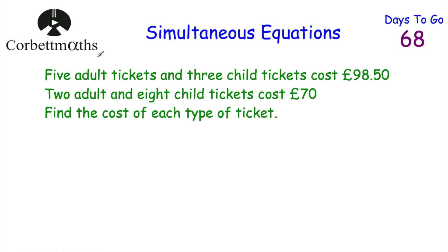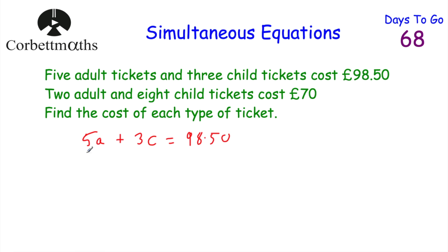Now let's have a look at a wordy question. 5 adult tickets and 3 child tickets cost £98.50. 2 adult tickets and 8 child tickets cost £70. Find the cost of each ticket type. Feel free to pause the video and try this question now yourself. If I was doing this question, I'd make 2 equations: 5A plus 3C equals 98.50 as equation 1, and 2A plus 8C equals 70 as equation 2.